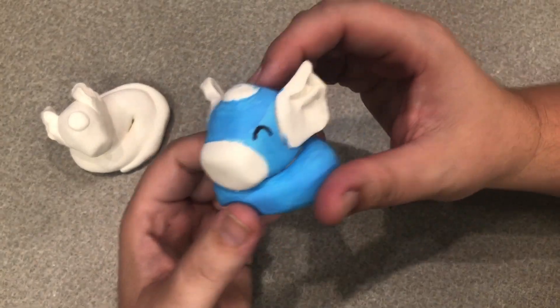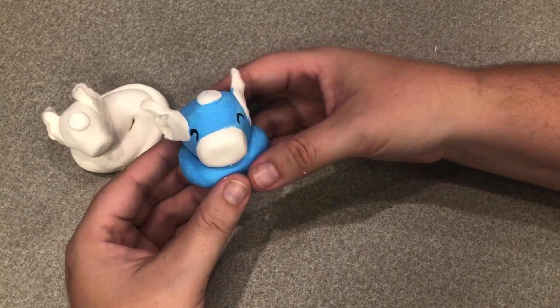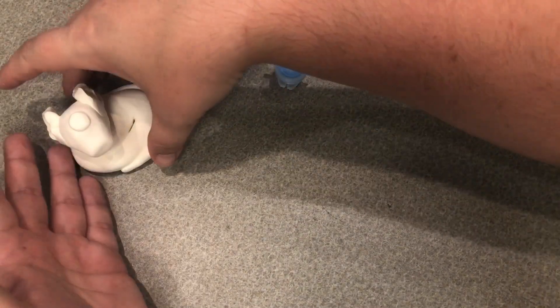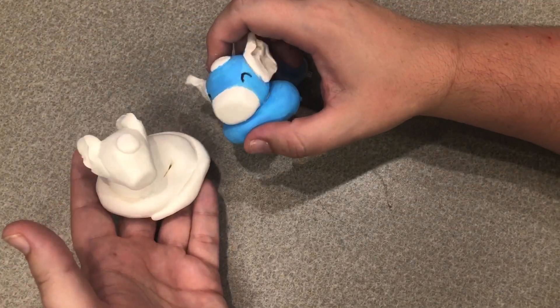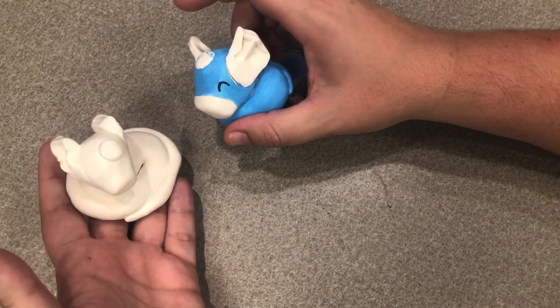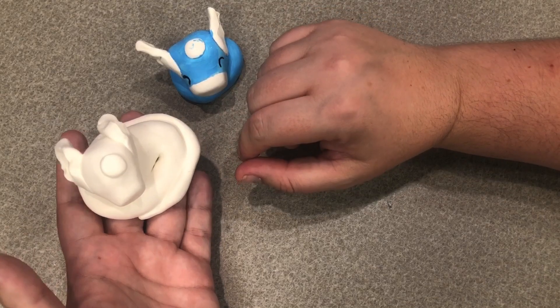And then once your paint is dry you can draw on some little sleeping eyes and then he's all done. Now you can see my two look different and if I made it again it would look different again so don't worry if yours does not look like mine.